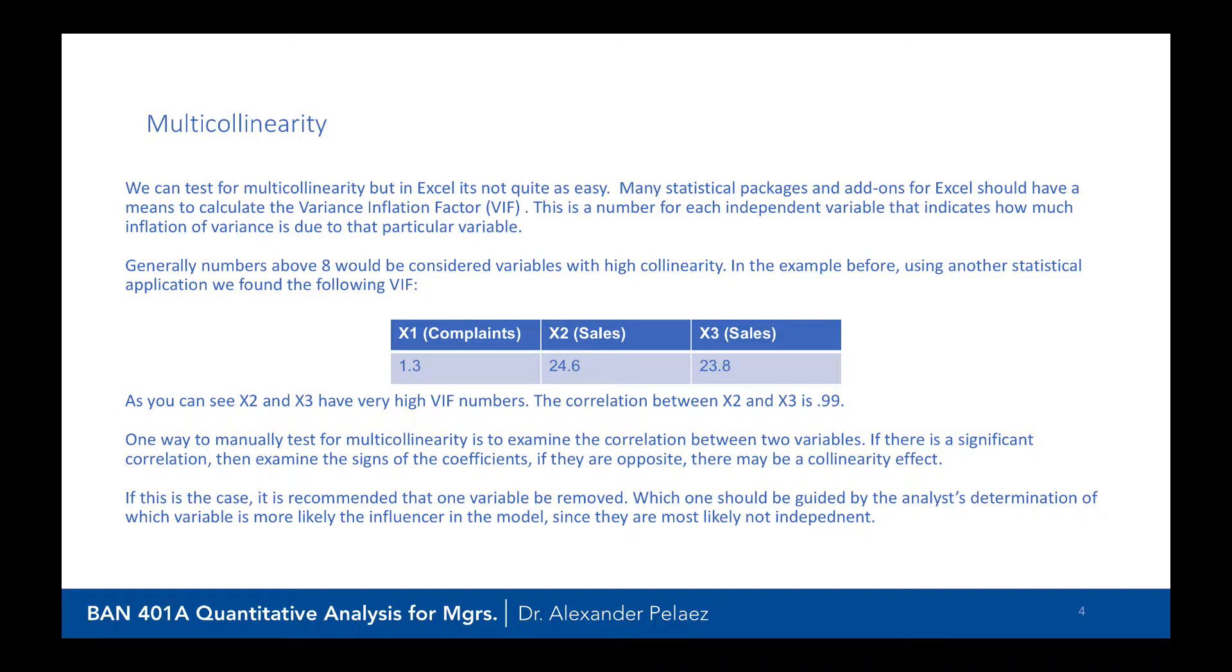So one way to test for multicollinearity is to examine the correlation between the two variables. If there is a significant correlation, then examine the signs of the coefficients. If they're opposite, you may have a collinearity effect. If this is the case, it is recommended that one variable be removed.